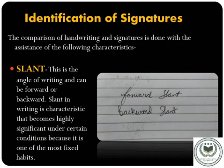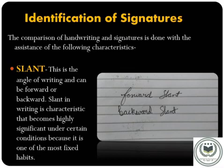Now we talk about the identification of signatures. The comparison of handwriting and signatures is done using several characteristics. The first is slant — the angle of writing, which can be forward or backward. Slant is highly significant because it is one of the most fixed habits of any individual.